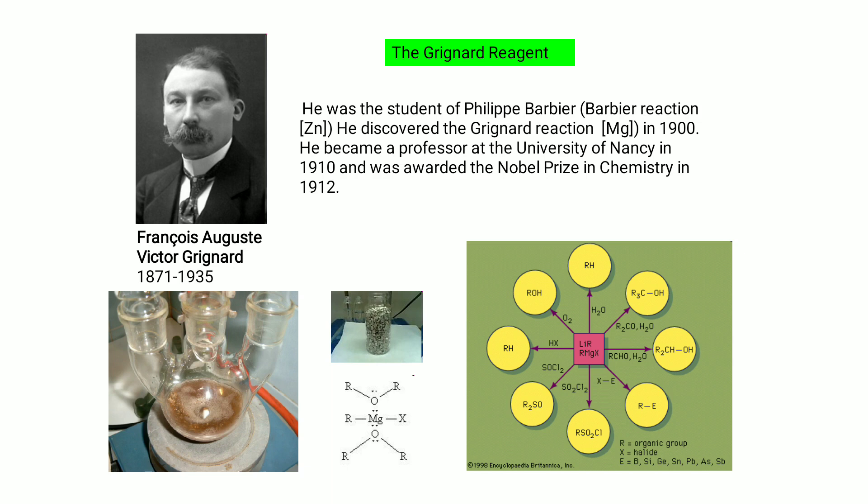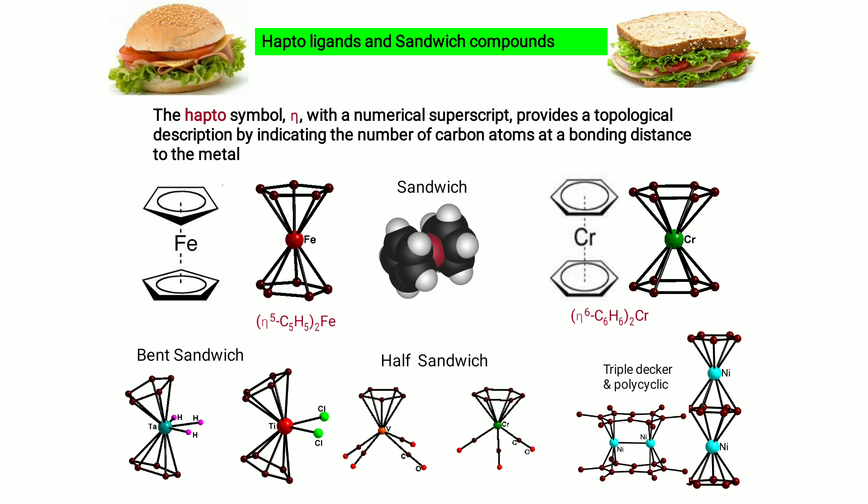Hapto ligands: the symbol eta with a numeric superscript provides a topological description indicating the number of carbon atoms at a bonding distance to the metal. Examples of sandwich compounds include ferrocene with iron, chromium, titanium, and nickel — some metal ions that can form sandwich compounds with geometry like bent sandwich, half-sandwich, triple-decker, or polycyclic.